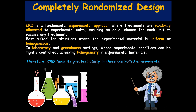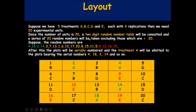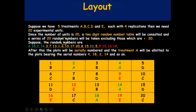For the basic layout, suppose we have five treatments — A, B, C, D, and E — each replicated four times. We then need 5 × 4 = 20 experimental units. Since the number of units is 20, a two-digit random number table should be consulted and a series of 20 random numbers will be taken, excluding those greater than 20.